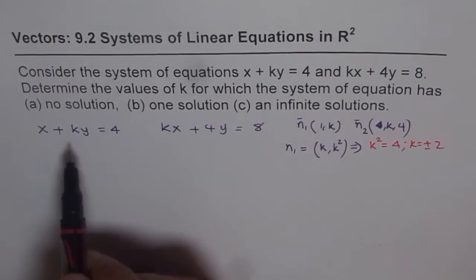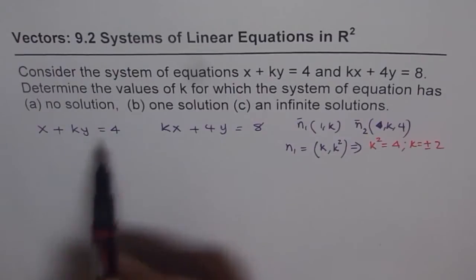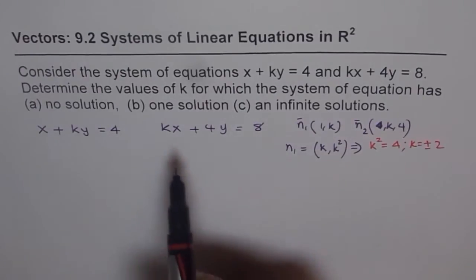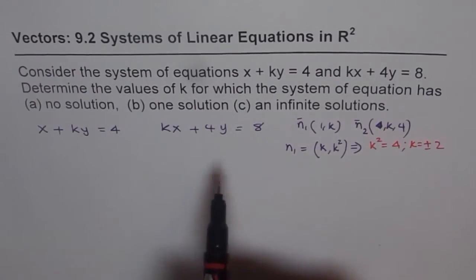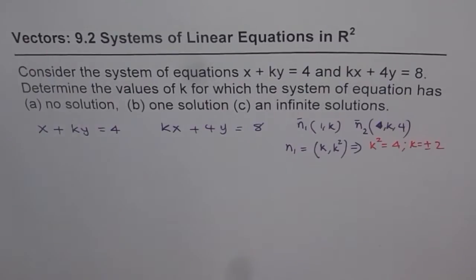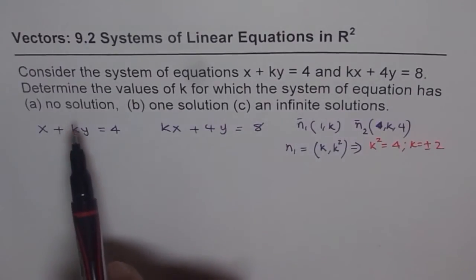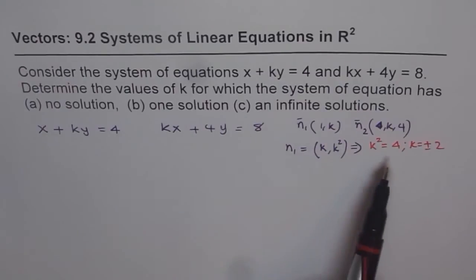Now if you write k as plus 2, you get one equation, and with minus 2 you get another equation. You will find that for one value of k, the equations are exactly same, and for the other value, the equations are with the same normal but different y-intercepts, so they are parallel. The parallel equation will have no solution, and the same equation will have infinite number of solutions.